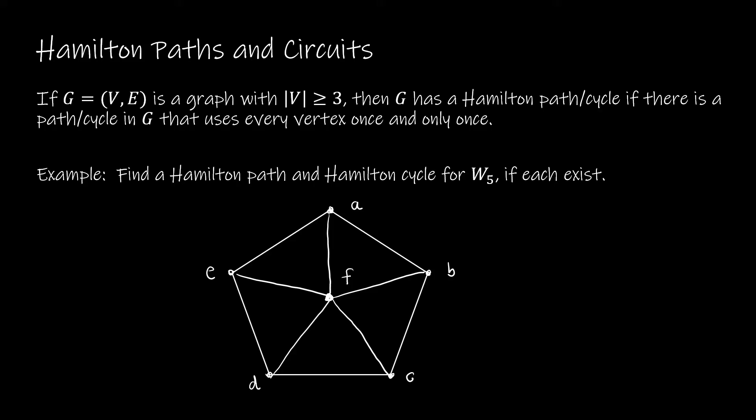So what's the difference between the two? If we're dealing with a Hamilton circuit, we're going to start at one vertex, travel to visit each other vertex only once, and then travel back to our beginning vertex. So even though we say it uses each vertex once and only once, if we're talking about a circuit, we will begin and end at the same vertex. For a path, we don't begin and end at the same vertex, but we still visit every vertex.